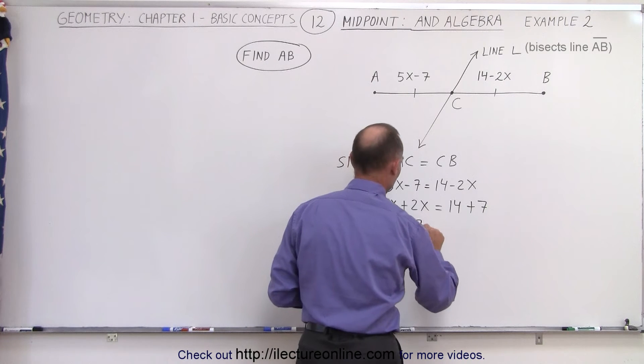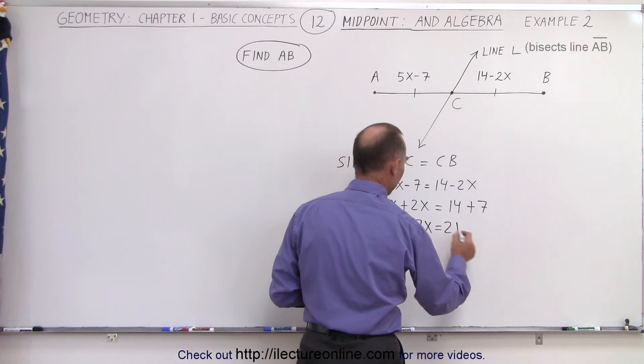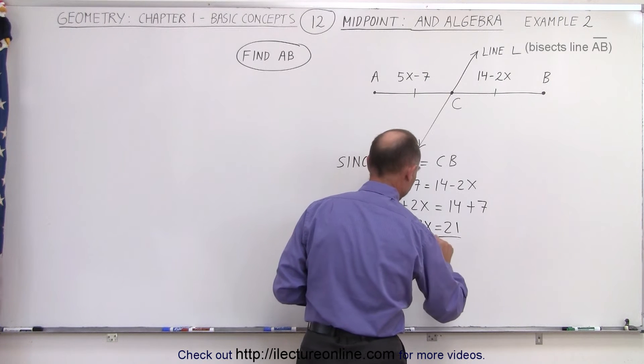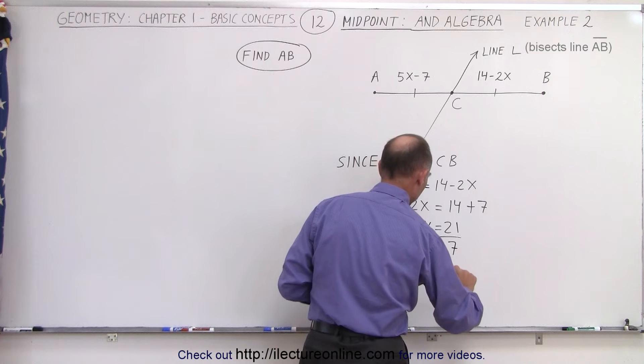So now we end up with 7x is equal to 21, divide both sides by 7, and we can see that x is equal to 3.